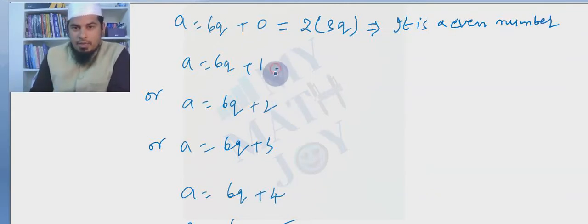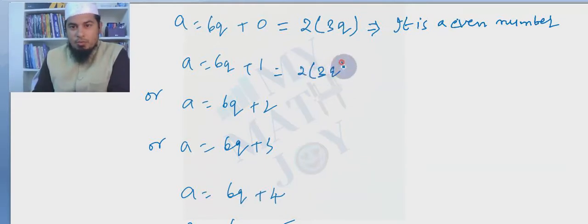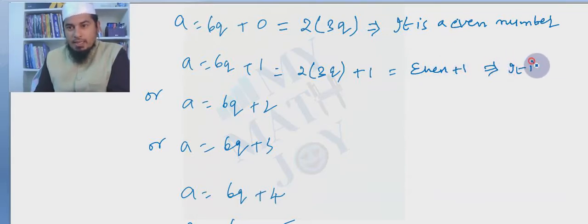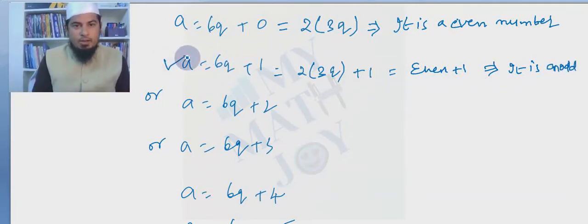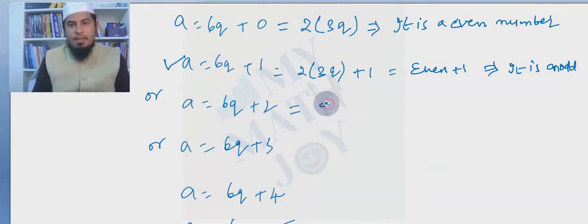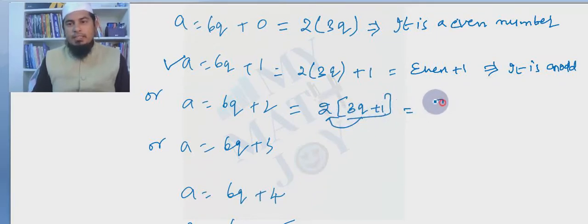For 6q+2: taking 2 common gives 2(3q+1), which is 2 times something — an even number. For 6q+3: we cannot take 2 directly, so we write 6q+2+1, take 2 common from 6q+2 to get 2(3q+1)+1, which is even+1 — an odd number.